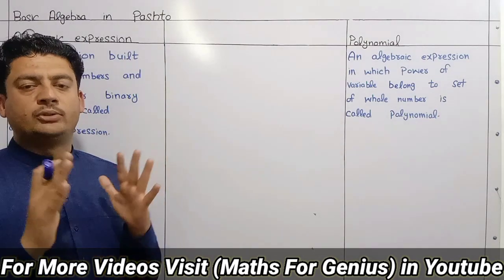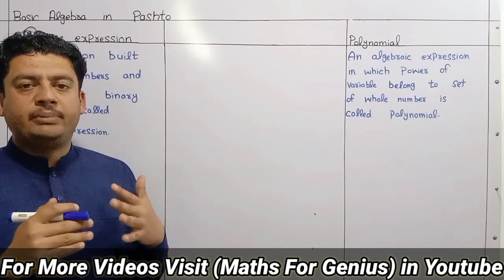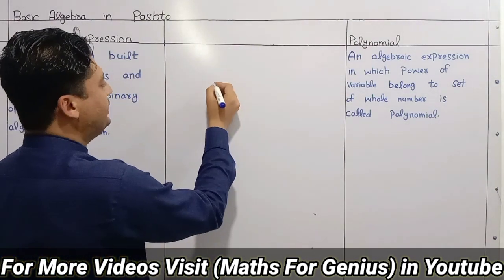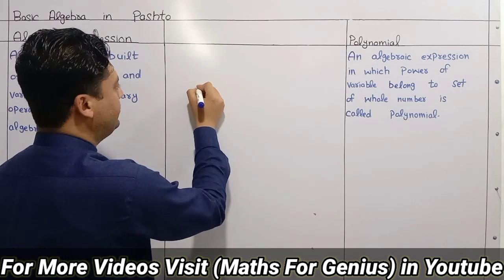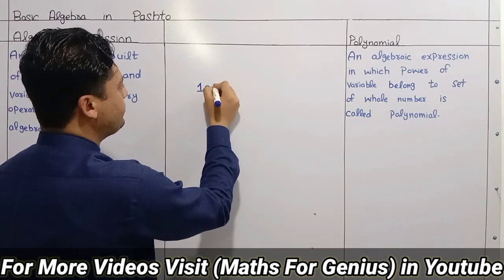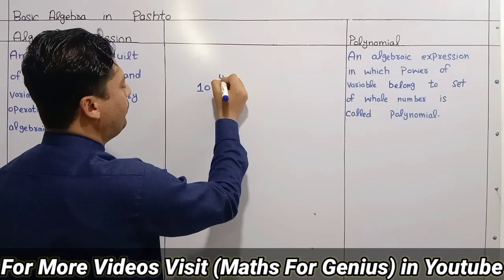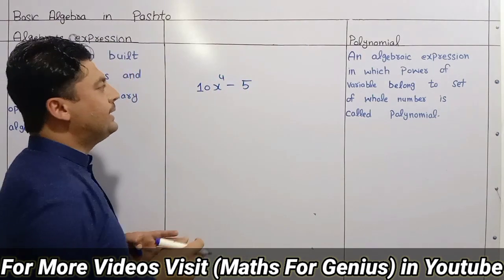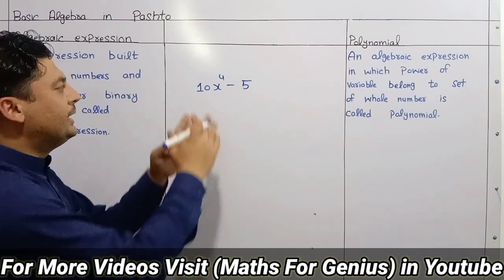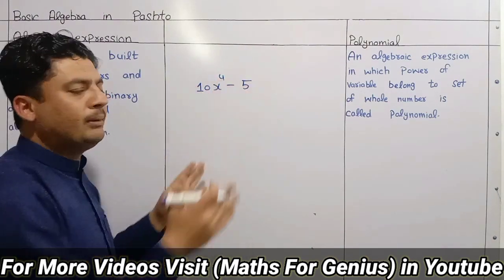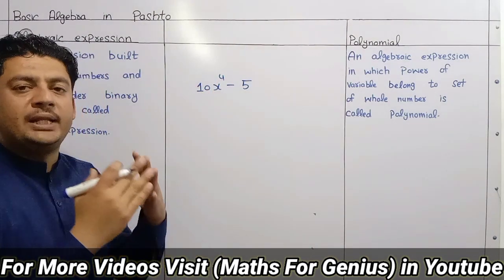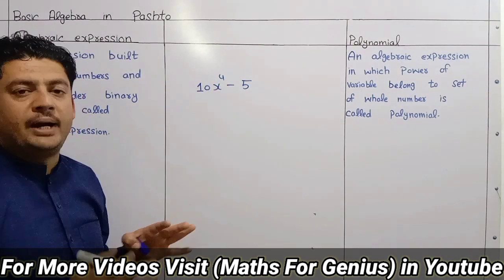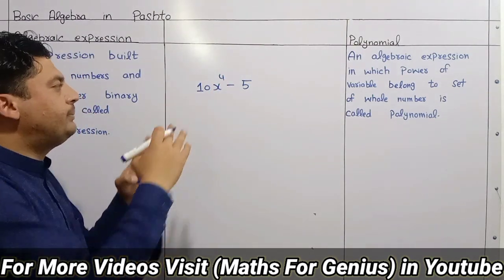Now, this is an Algebraic Expression. For example: 10x⁴ minus 5. The variables, numbers, and binary operations — such as minus — make up this Algebraic Expression.